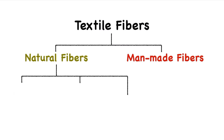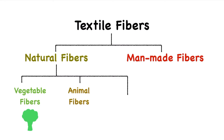Natural fibers can be subdivided into three categories: vegetable fibers, animal fibers, and fibers from minerals.